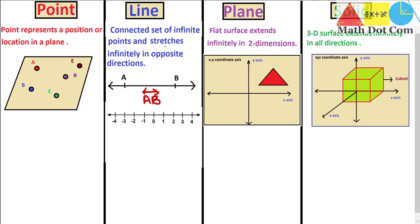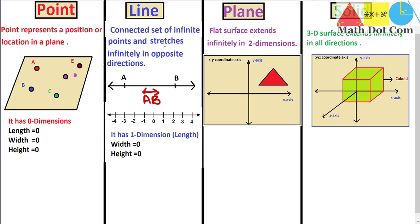Now we will talk about the dimensions of all four types of objects. First, a point has zero dimensions — it is just a dot representing a position and does not have length, width, or height. So length equals zero, width equals zero, height equals zero — no dimension at all. Then we have the line. A line has only one dimension, that is length. A line segment can be measured and if we say line AB has a value of 5 cm or 6 cm, it represents its length. It has zero width and zero height.